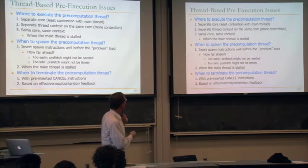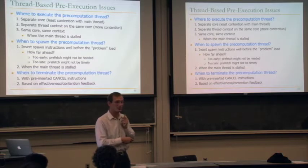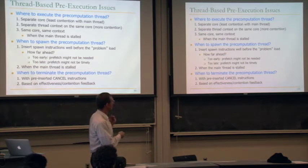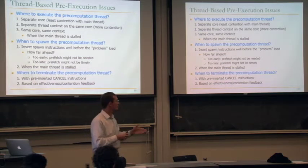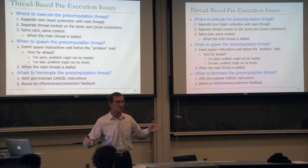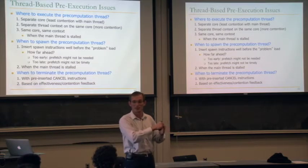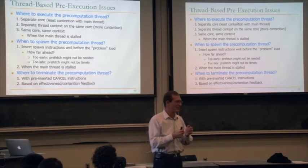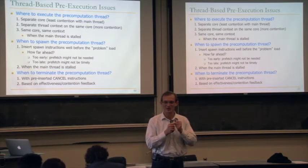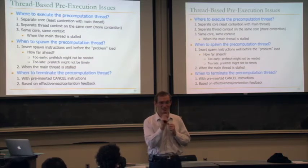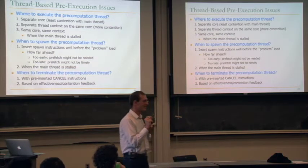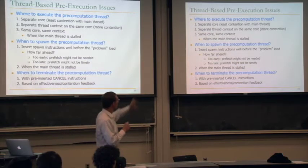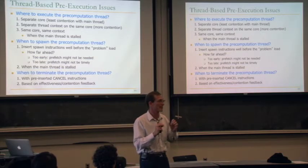Another approach is to spawn the pre-computation thread when the main thread is stalled. Runahead execution does this — when the main thread stalls for a long-latency cache miss, you can fetch one of these pre-computation threads. But that may not always be your best option; you need to make sure the pre-computation thread will be beneficial at that point. There are a lot of unresolved issues in thread-based pre-execution, even something like helper threading.